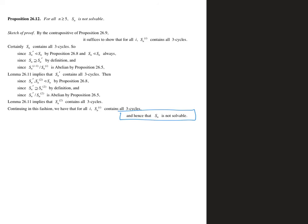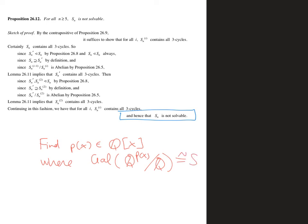The very last piece of this puzzle is to find P(x) in Q[x] where the Galois group is isomorphic to S5. Then we've got that its Galois group is not solvable, and therefore P(x) is not solvable by radicals.